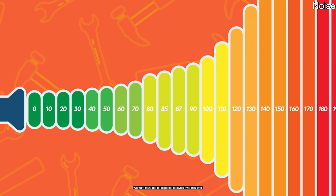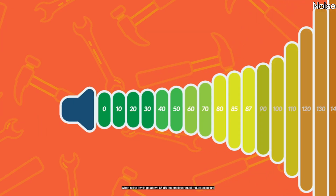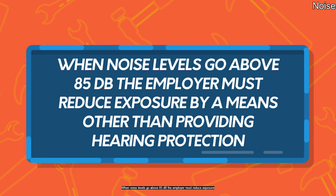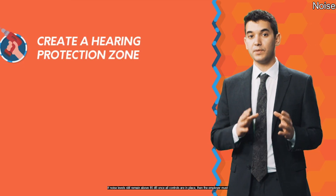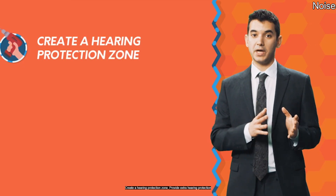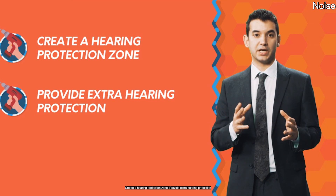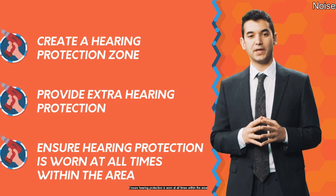Workers must not be exposed to levels over this limit. When noise levels go above 85 decibels, the employer must reduce exposure by a means other than providing hearing protection. If noise levels still remain above 85 decibels once all controls are in place, then the employer must create a hearing protection zone, provide extra hearing protection, and ensure hearing protection is worn at all times within the area.